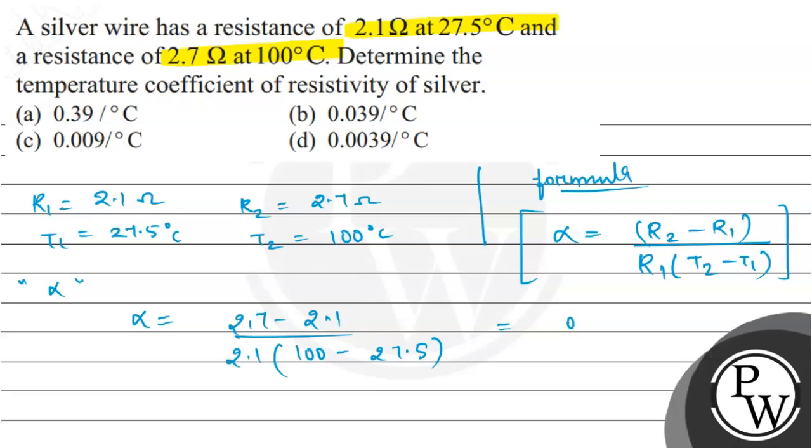This comes out to be 0.6 upon 2.1 into 72.5. So the value of alpha that we get is 0.039 per degree centigrade. This is the value of temperature coefficient.